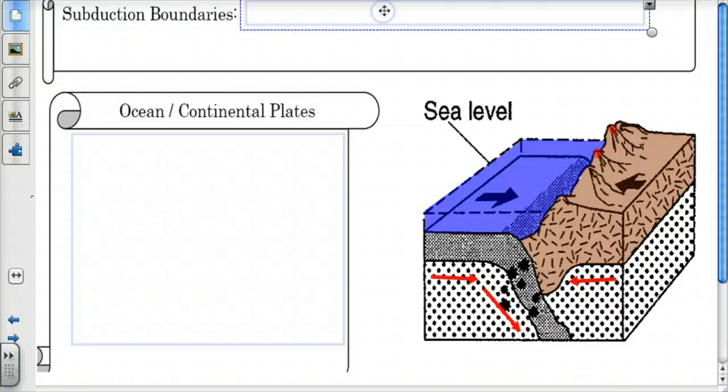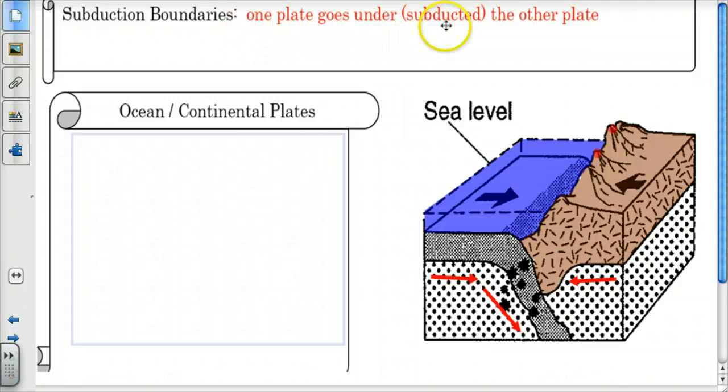The next is what we call a subduction boundary, where one plate goes underneath the other. The only way that we get a subduction is when we have continental rock that is 2.7 in density, 2.7 grams per centimeter cubed, and the ocean is 3.0 grams per centimeter cubed. So which one is going to stay on top and which one is going to sink down below? The continent is less dense, so it stays up above, and the ocean goes down underneath it. That's what we call subduction.